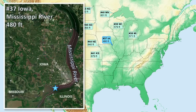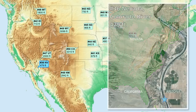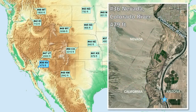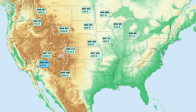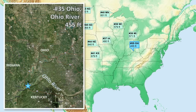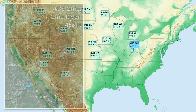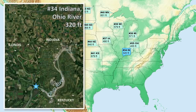Number 37 is Iowa, on the Mississippi River. Number 36 is Nevada, on the Colorado River. Number 35 is Ohio, on the Ohio River. Number 34 is Indiana, also on the Ohio River.